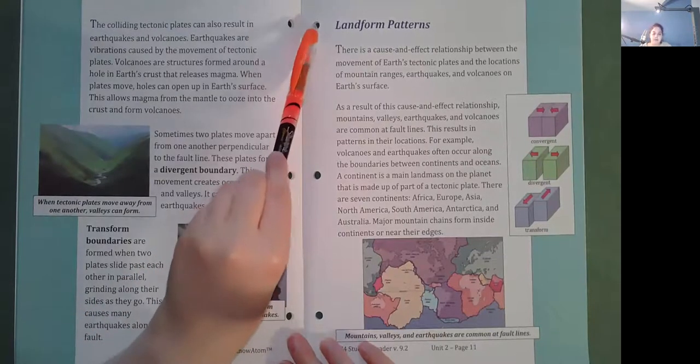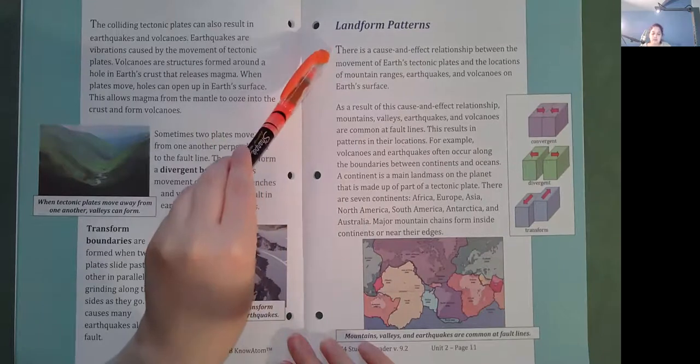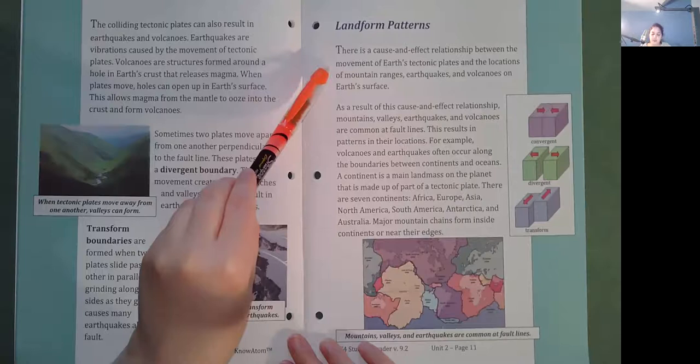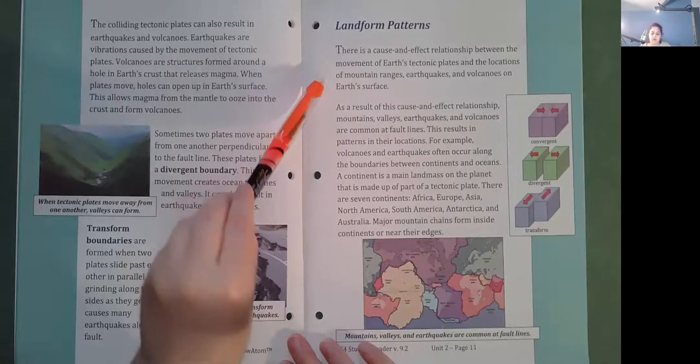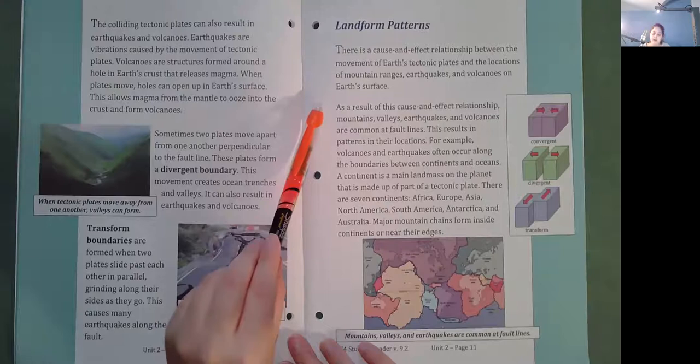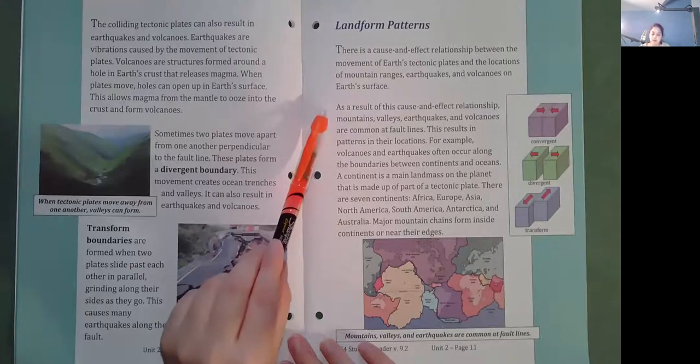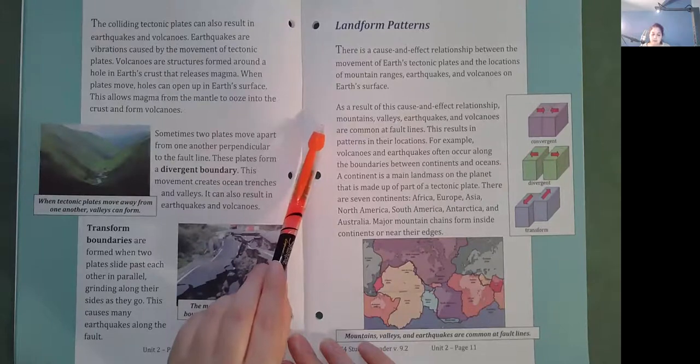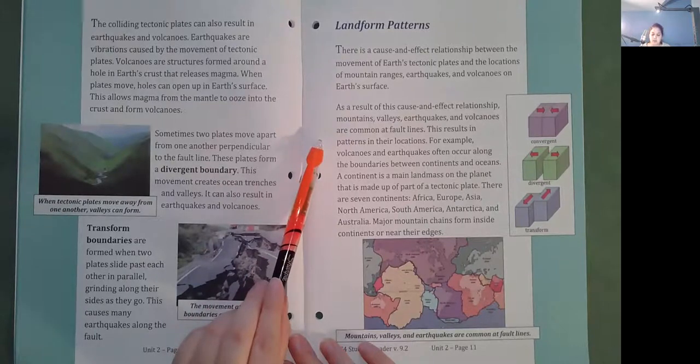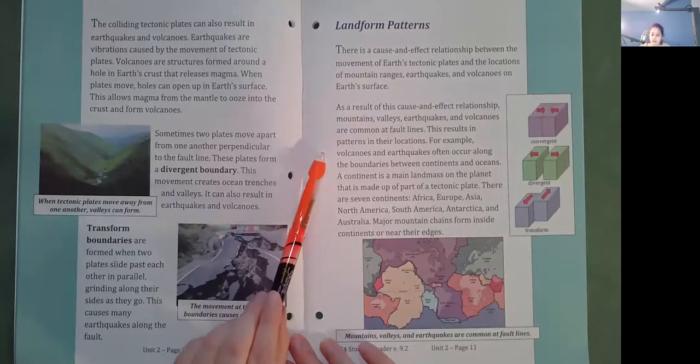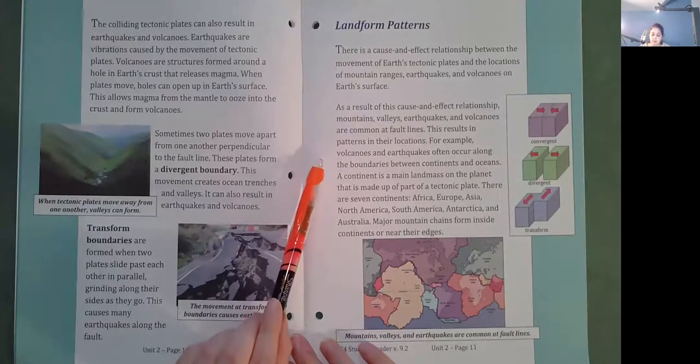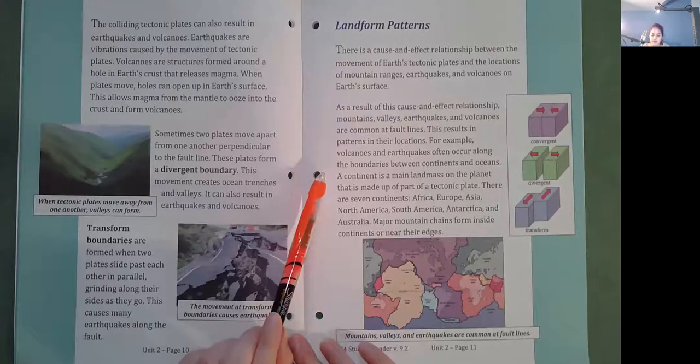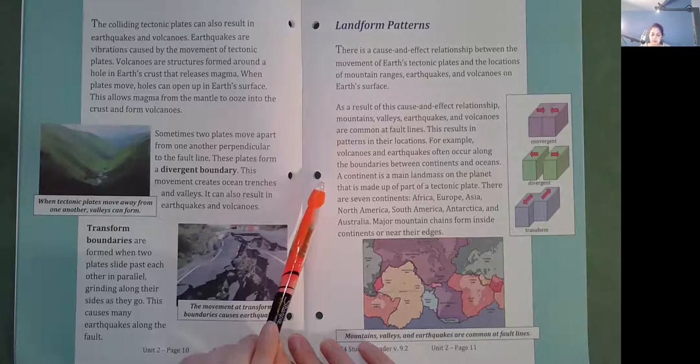Landform patterns. There is a cause and effect relationship between the movement of Earth's tectonic plates and the location of mountain ranges, earthquakes and volcanoes on Earth's surface. As a result of this cause and effect relationship, mountains, valleys, earthquakes and volcanoes are common at fault lines. This results in patterns in their location. For example, volcanoes and earthquakes often occur along the boundaries between continents and oceans.